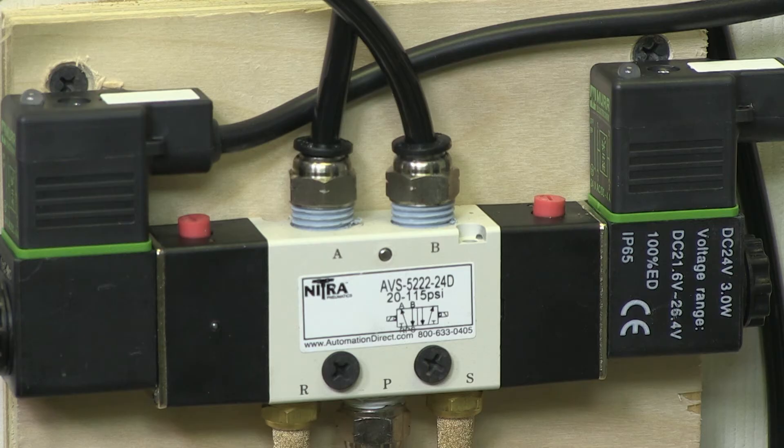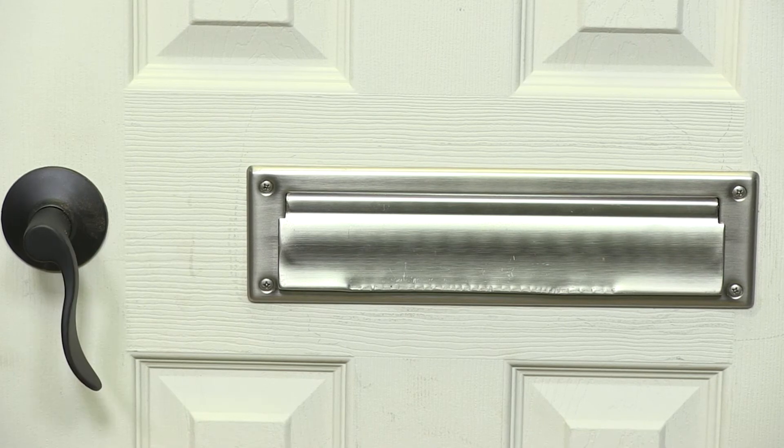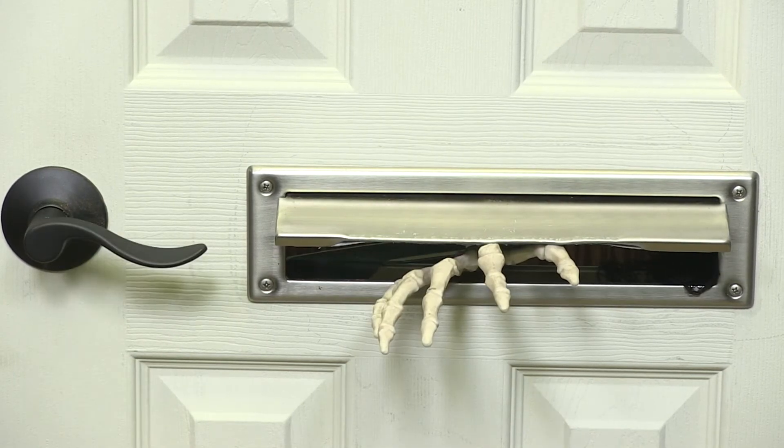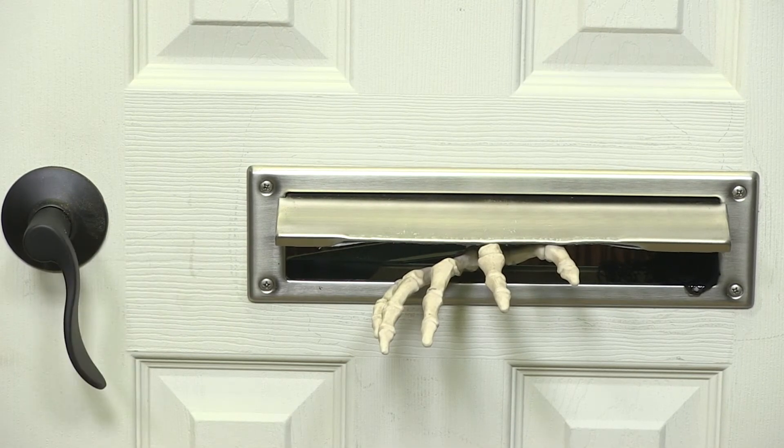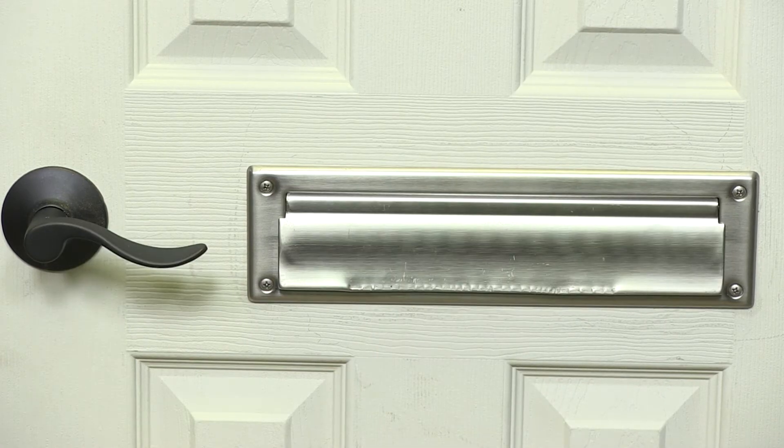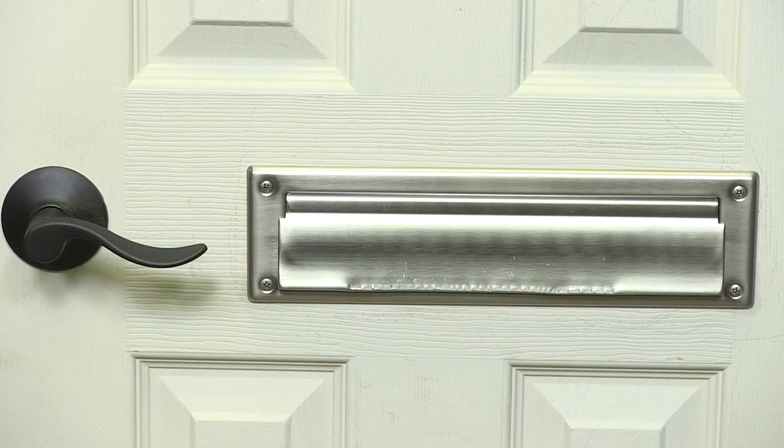We chose the four-way valve on the mail slot air cylinder so I can control the extension and retraction, and if we want to stop the hand somewhere in between full extension or retraction, we can. Otherwise I would have used a spring return solenoid which would have only allowed the cylinder to be at full extension or full retraction but nowhere in between.